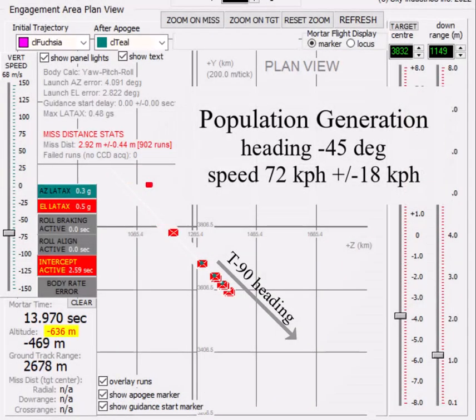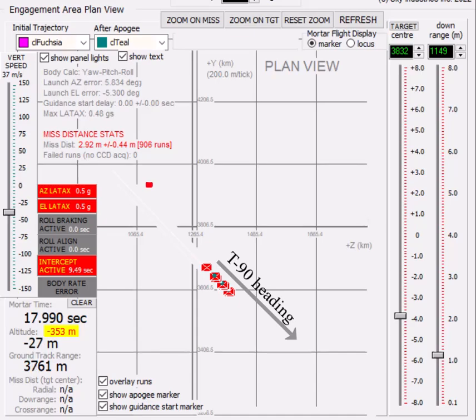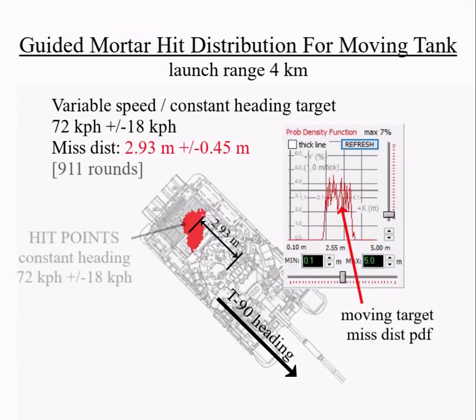Now, it's easy to check that. Just repeat the experiment with a tank driving along a fixed heading, with the same variation of speed and mortar launch angle error. And this turns out to be the case. Most of the rounds do land in the back half of the tank target.